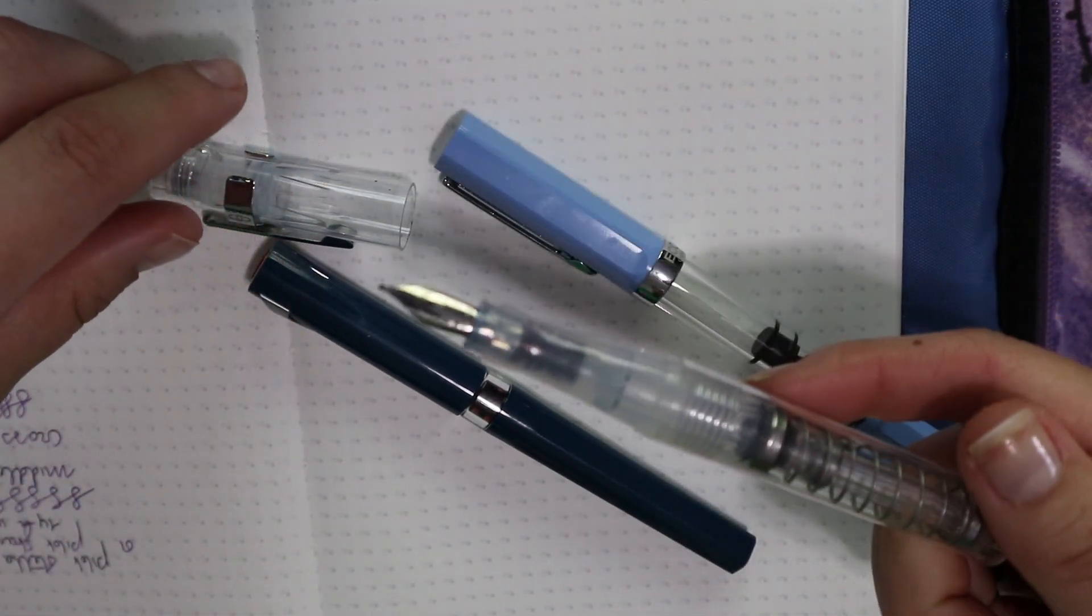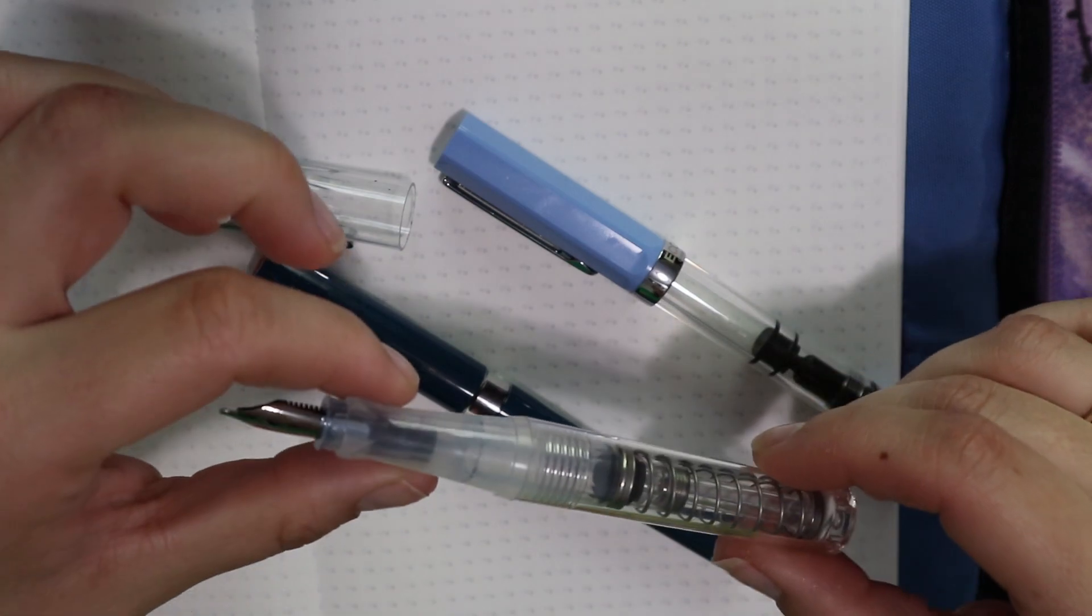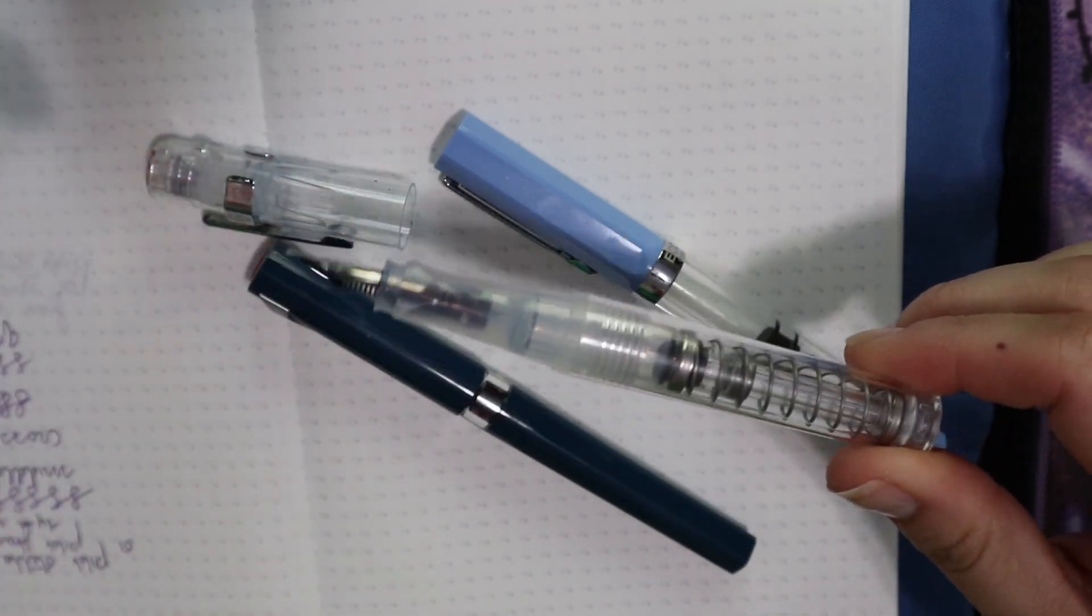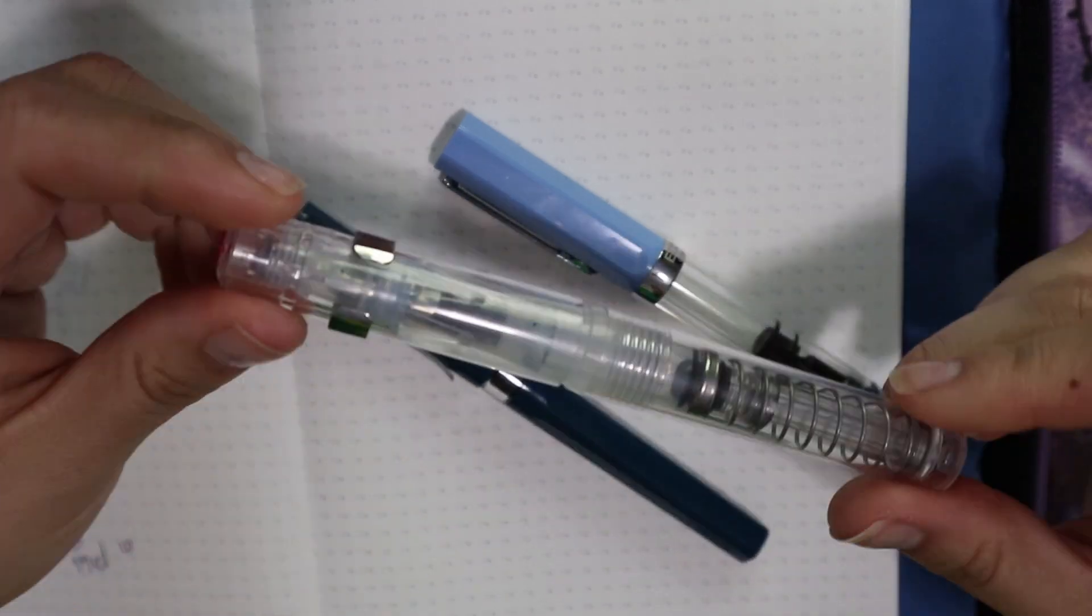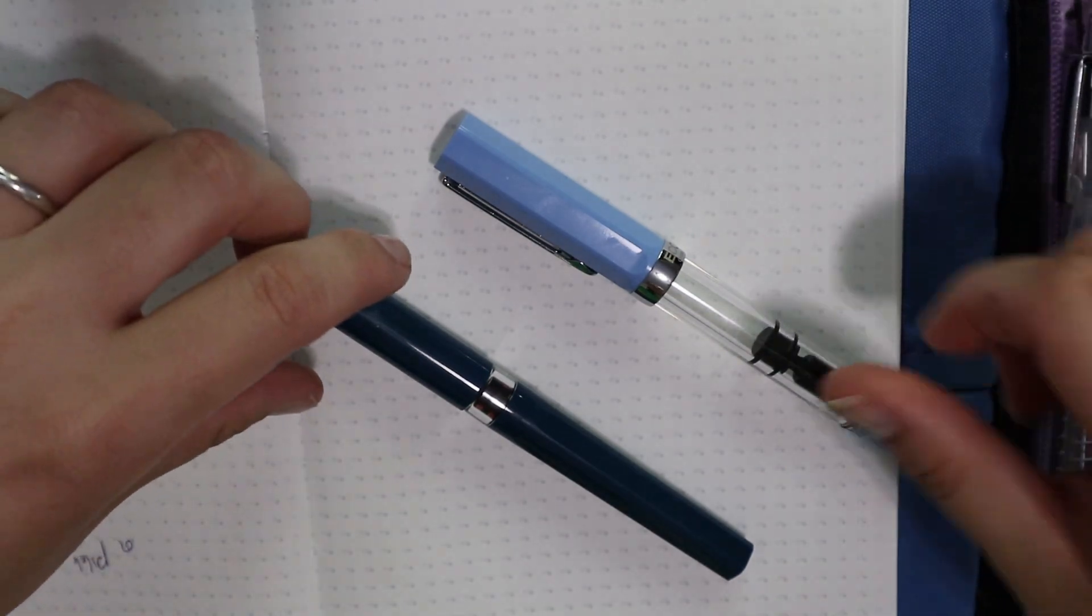This one looks really bad. I had Baystate Blue in this at some point, and Baystate Blue is not great for pens. Anyway, Go is gonna go right now, and we're gonna look at the Swipe.